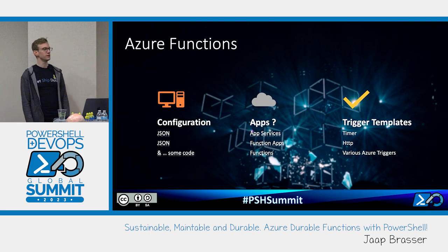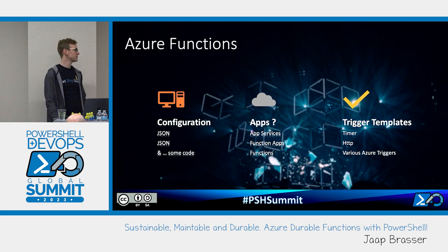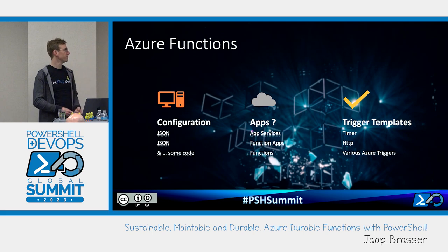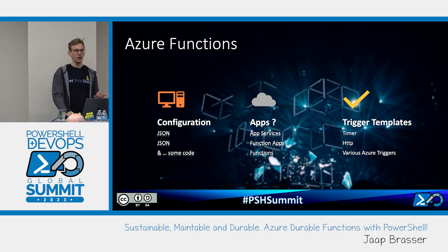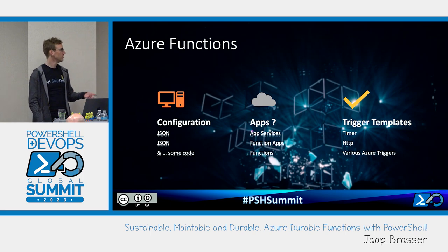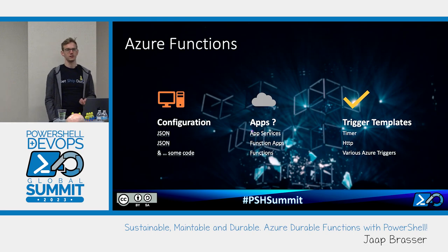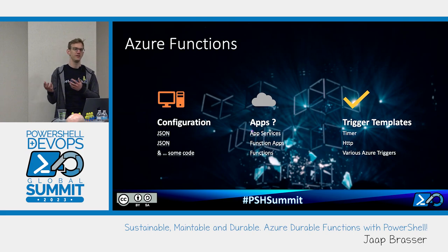The configuration of Azure functions, if you look at what you get on your file system, it's just a bunch of JSON files — and in addition to that, some extra JSON files and a bit of code. The functions themselves live inside function apps, and function apps live within app services in Azure. Azure functions trigger based on certain events: common ones are timer, manual where you click a button to start it, or an HTTP trigger — which is my favorite because it allows you to interact with other API endpoints and API endpoints can interact with you.